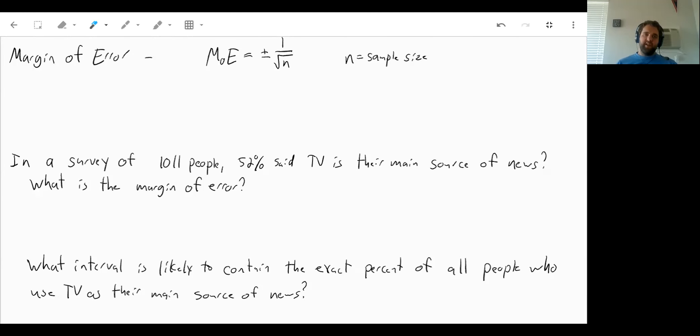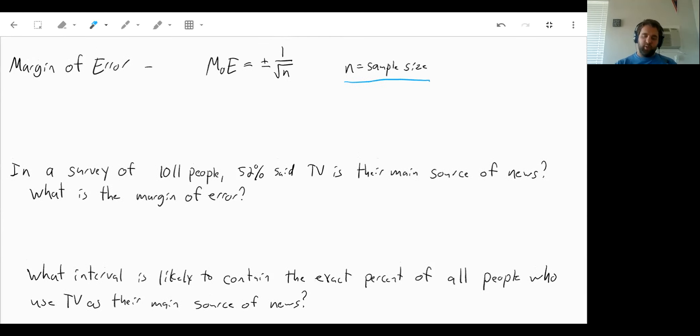The last thing in this section is figuring out what is the margin of error for a sample. So if we have n people in our sample, the margin of error is equal to plus or minus one over the square root of n. What this says is we know we didn't get to ask everyone in the population for our sample. That was just too much work, too much money, we couldn't do it.